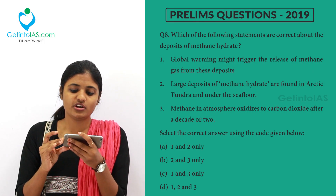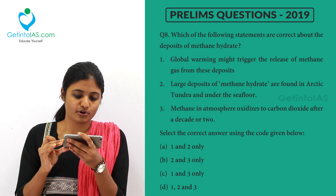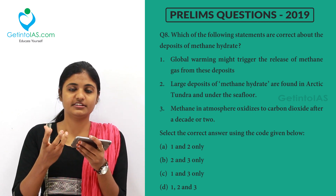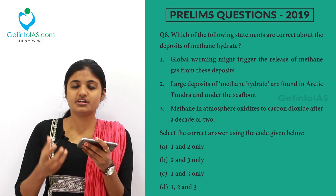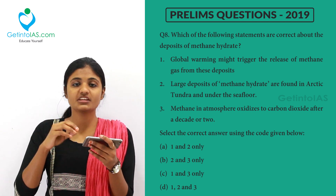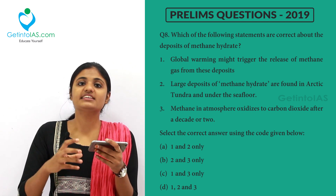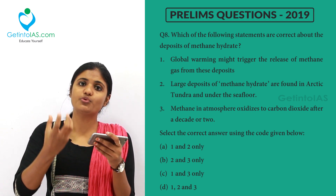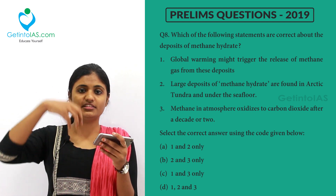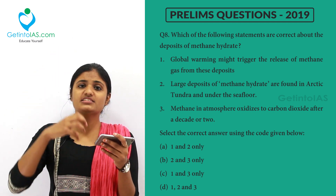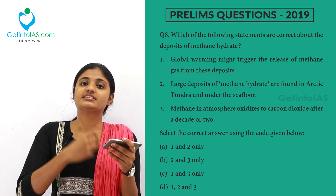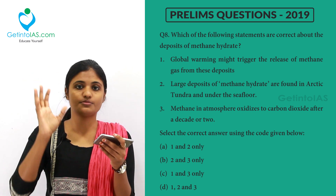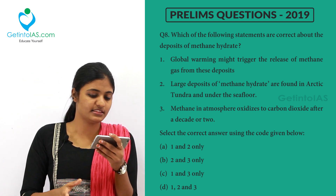Next question: which of the following statements are correct about the deposits of methane hydrate? These are found in the permafrost. Due to global warming, ice is melting and methane hydrate found deep inside ocean water near the north and south poles is being released. When the water melts, there is an outflow of methane hydrate, which is a poisonous gas and not good for health.